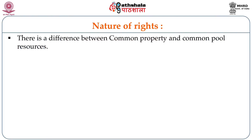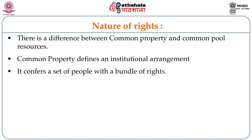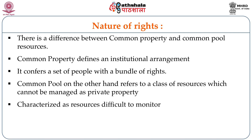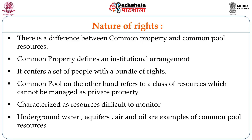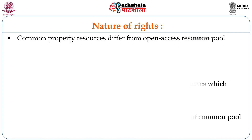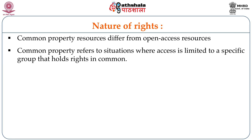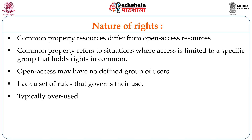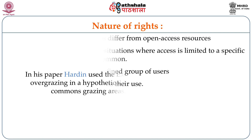There is a difference between common property and common pool resources. Common property defines an institutional arrangement and confers a set of people with a bundle of rights. Common pool, on the other hand, refers to a class of resources which cannot be managed as private property. These are characterized as resources which are difficult to manage — air is a good example. Underground water sources, oils and aquifers are all common pool resources. Common property resources also differ from open access resources, where access is not limited to a specific group and there is no defined set of rules governing use. These are the kinds of resources which are often overused.